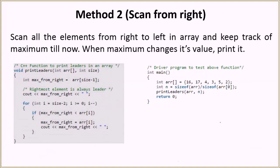So then we also have a better solution here which is scanning from the right side. We scan all the elements from right to left and then we keep a track of the maximum till now. So whenever the maximum value changes, then that will be basically the leader and we will be printing its value.